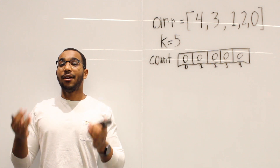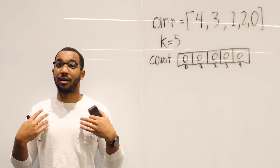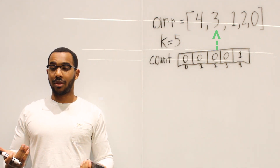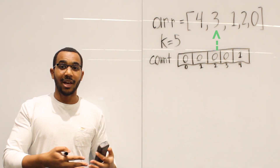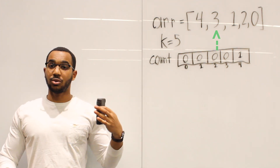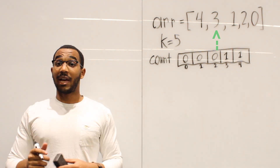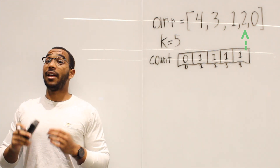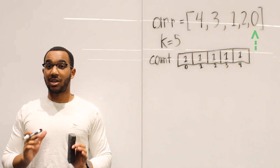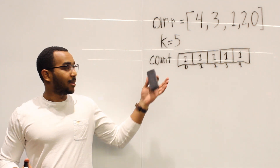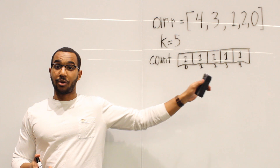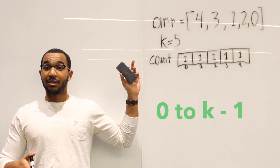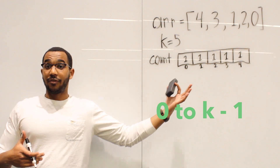Now we do the counting part. We count how many occurrences there are of each element, and we do this in linear time. We start at the four — we have one four. Next we move to the three — increment the occurrences of three, zero plus one is one. Then we see a one, add an occurrence. Then a two, add an occurrence. Then a zero, add an occurrence. So we made our count array, and apparently each one of these items occurred once. We're tracking zero through four. This array holds all elements from zero to k minus one. k is five, the last index is four, and we have five total items which is k.